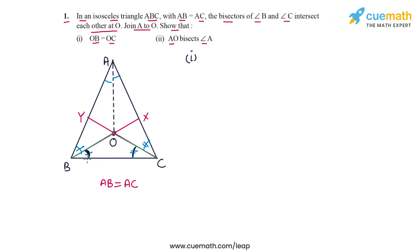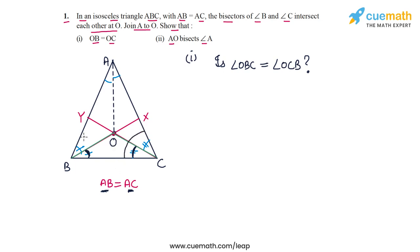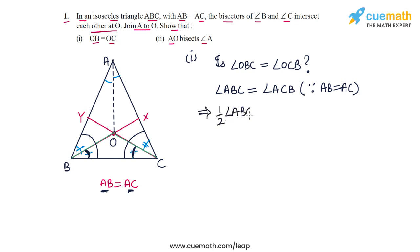Angle OBC is half of angle ABC, and angle OCB is half of angle ACB. So we need to determine if angle OBC equals angle OCB. Because triangle ABC is isosceles with AB equal to AC, the angles opposite these sides must be equal. The angle opposite AB is angle ACB, and the angle opposite AC is angle ABC. So angle ABC must be equal to angle ACB.